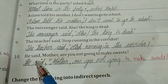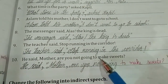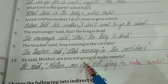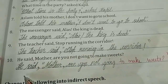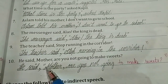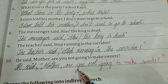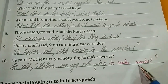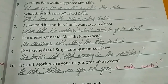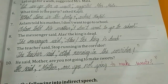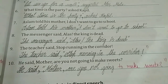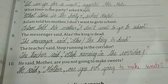Next: He said, 'Mother, are you not going to make sweets?' Write: He said, comma — start inverted commas — 'Mother, are you not going to make sweets?' then close the inverted commas. Okay children, I hope you all understood. Changes in pronouns I will take in the next session. If you have any doubt, you can ask me in the interactive session. Thank you.